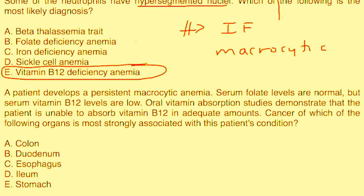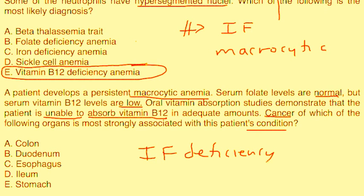Next one. A patient develops persistent macrocytic anemia. Serum folate levels are normal, but serum vitamin B12 levels are low. Oral vitamin absorption studies demonstrate that the patient is unable to absorb vitamin B12 in adequate amounts. Cancer of which of the following organs is most strongly associated with the patient's condition? Well, this is another classic scenario where a patient is not able to absorb. So that means there's an intrinsic factor deficiency. And that means that the patient most likely had gastritis, chronic gastritis most likely. And if you remember, chronic gastritis can lead to stomach cancers.